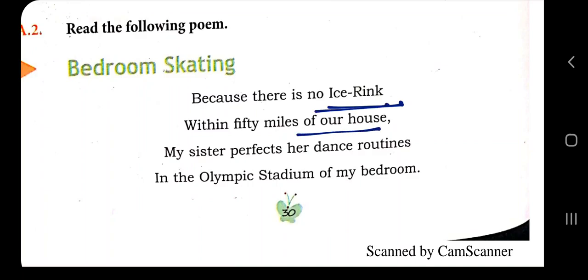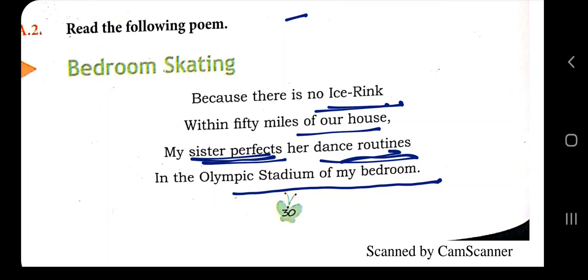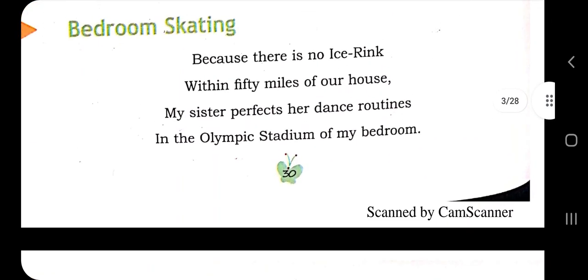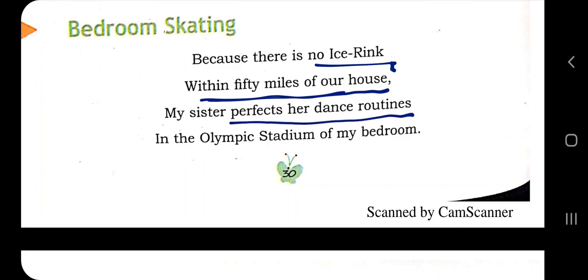There is no ice rink within 50 miles of their house. The poem describes how a sister perfects her dance routines in what she calls the 'Olympic stadium of her bedroom.' She cannot go to an ice rink as she does not have that facility, so she is perfecting her dance routine right there in her bedroom, which she has imagined as an Olympic stadium.